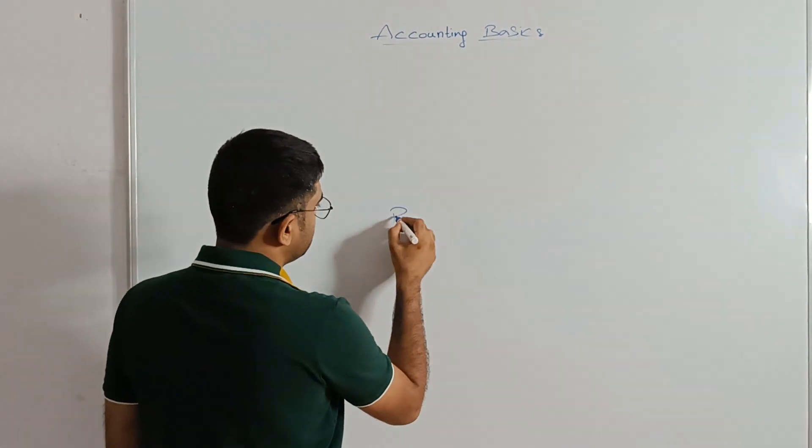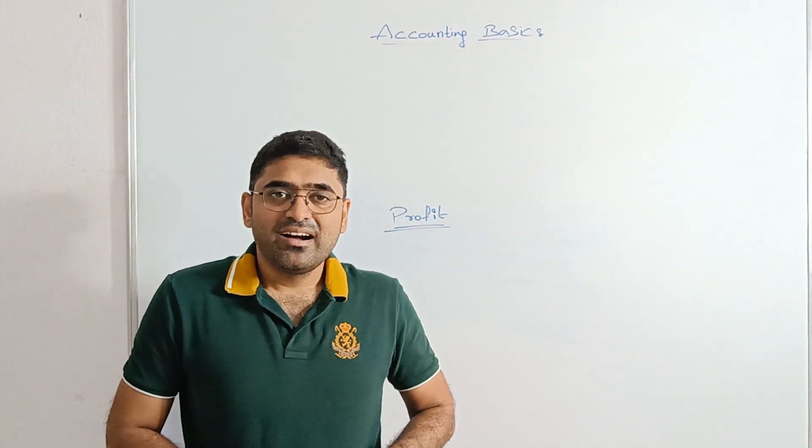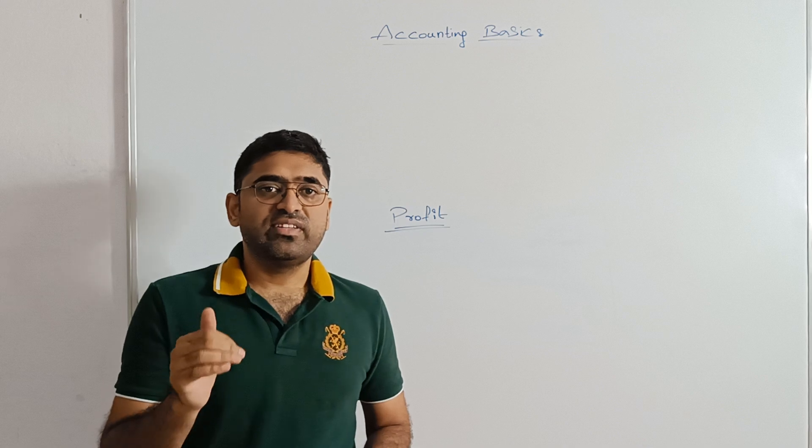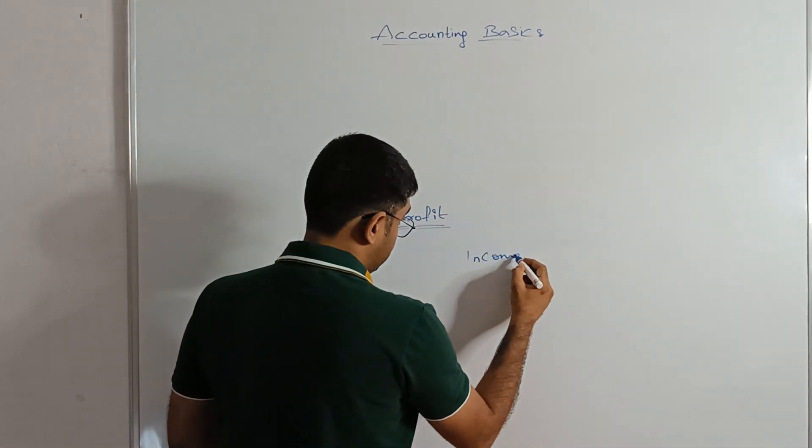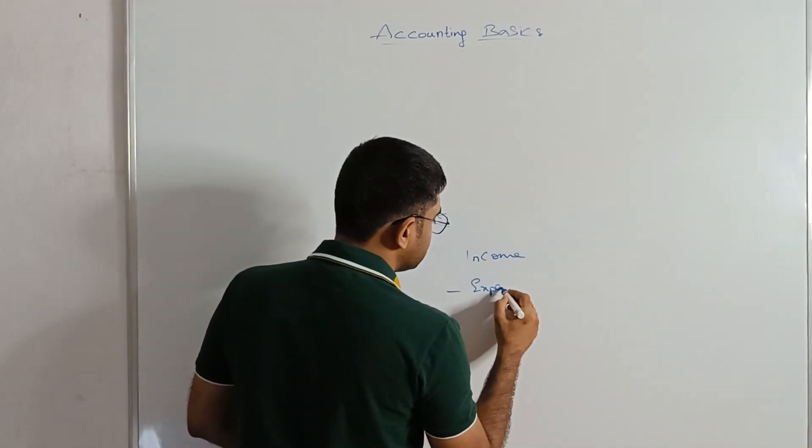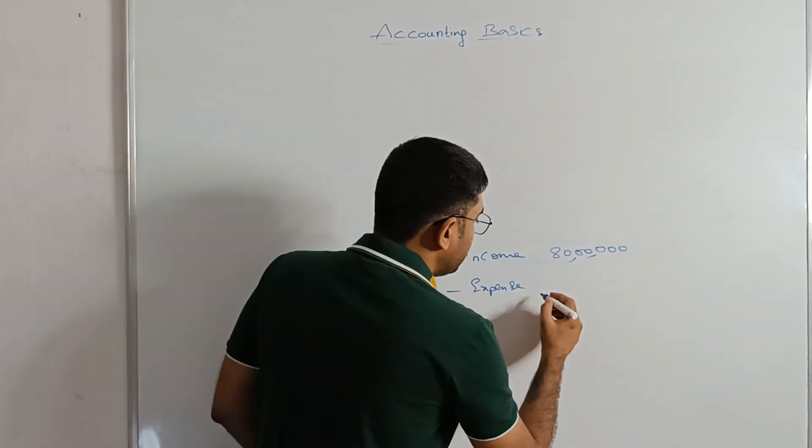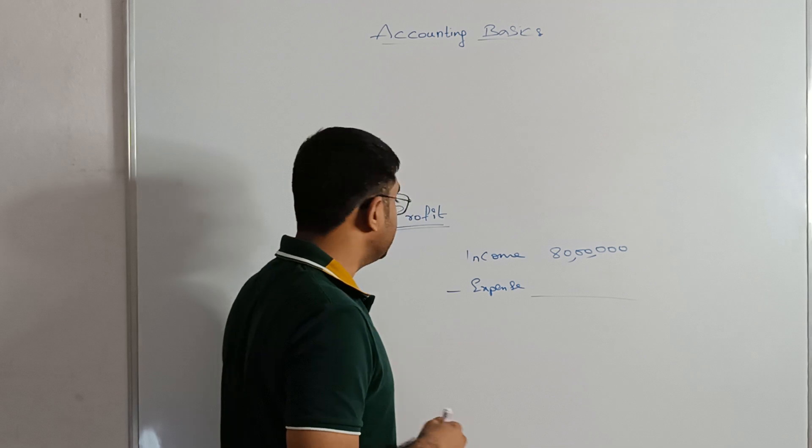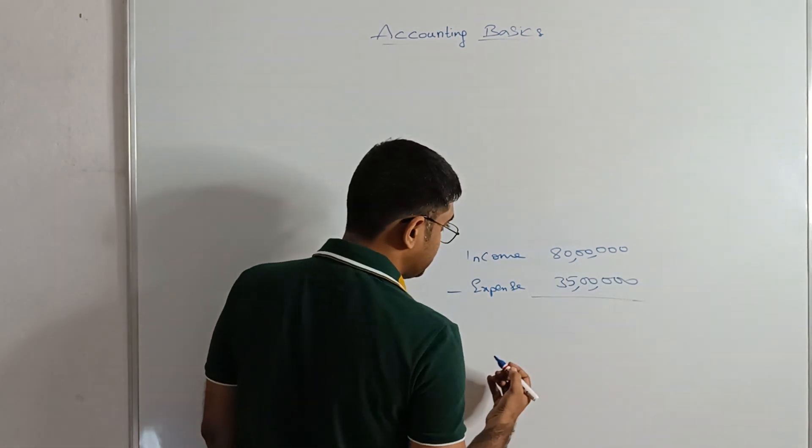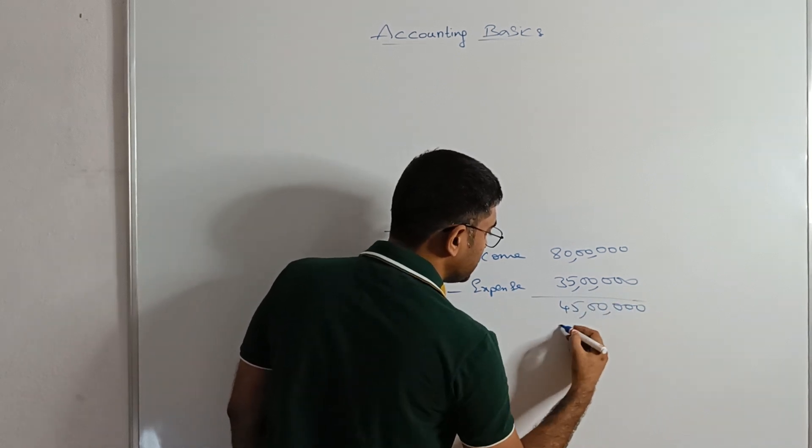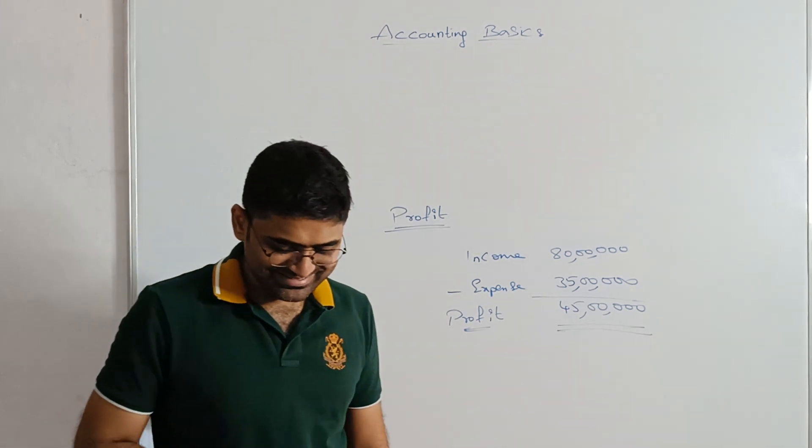The next topic is profit. Everyone do business for earning profit. Okay? Profit is nothing but the difference between the amount you earned and the amount you spent. Right? Profit equals income minus expense. See a person is earning 80 lakh rupees from the business he is doing. Like from the goods and services being provided. And for providing that he spent 35 lakh rupees as the expenditure. So here 45 lakhs is considered as the profit. Very good profit.